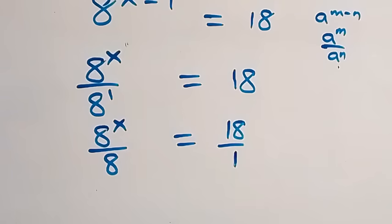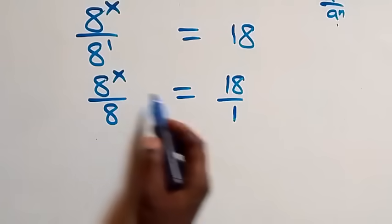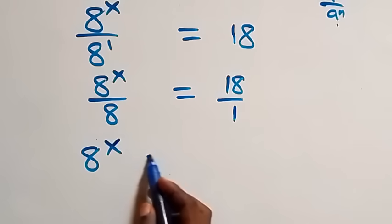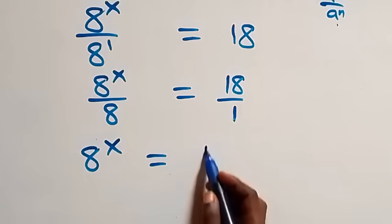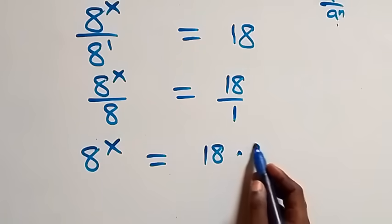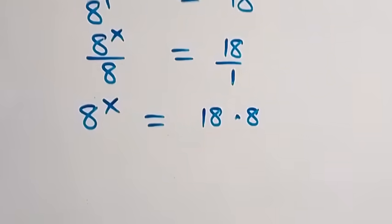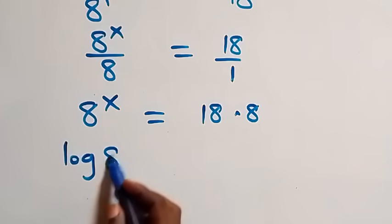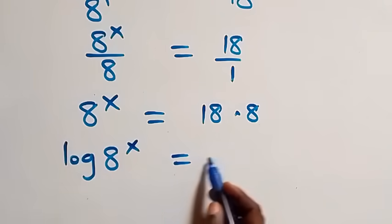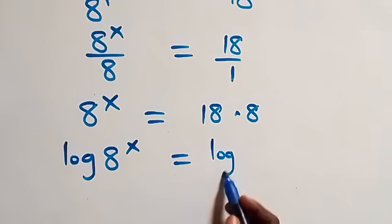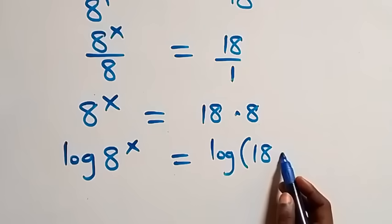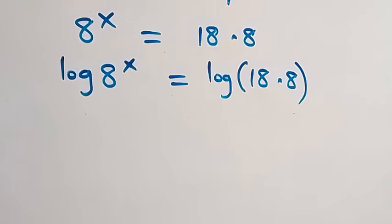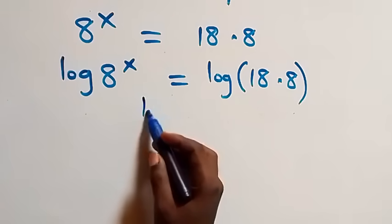This is also 18 over 1. Then we cross multiply: a raised to power x times 1, which is the same as a raised to power x, equals 18 times 8. The next step: let's take the log on both sides, and we have log 8 raised to power x equals log of 18 times 8.